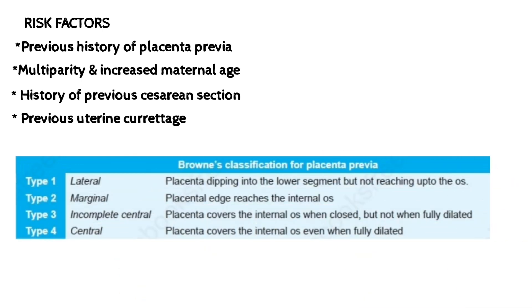Now comes the classification. There is a classification known as Brownie's classification for placenta previa, which includes four types: lateral, marginal, incomplete central, and central. In the lateral type, the placenta dips into the lower uterine segment but does not reach the internal os. In marginal, it reaches the internal os. In incomplete central, the placenta covers the internal os when it is closed.